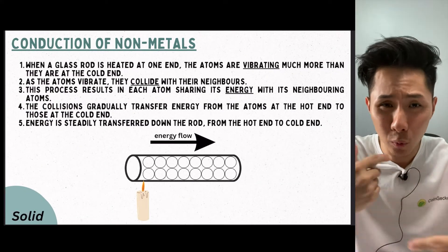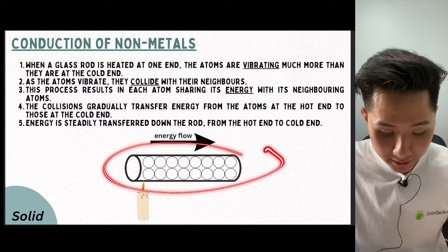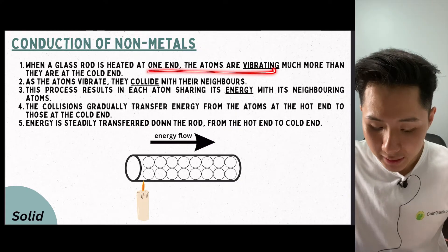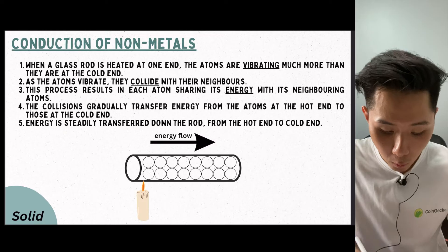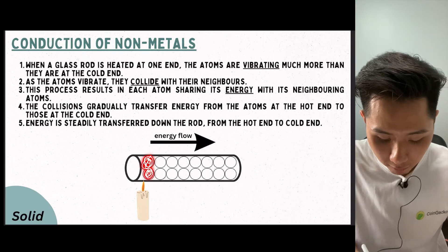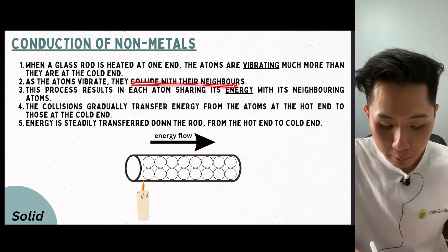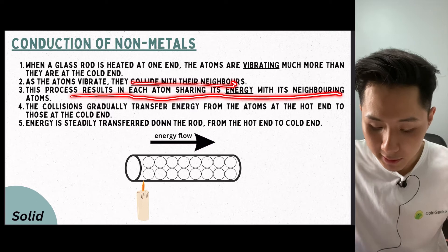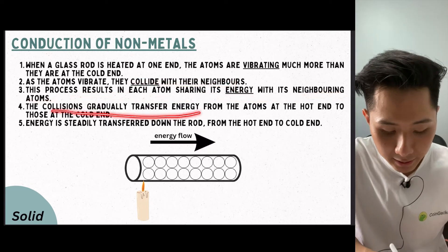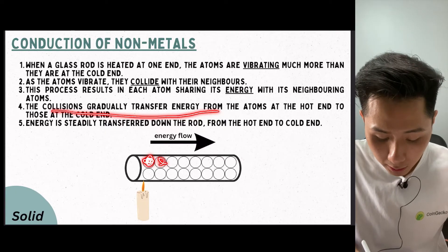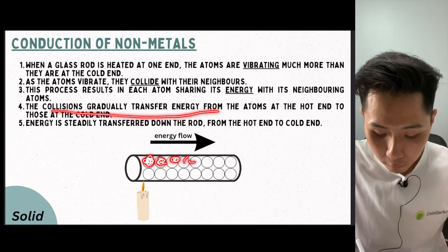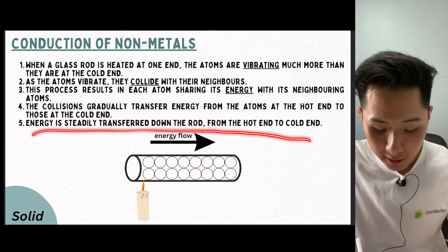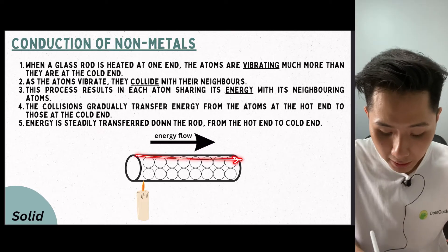Let's look into how conduction works internally. So I have a non-metal here — glassware. When the glassware is heated at one end, the atoms are vibrating more than they are at the cold end. As the atom vibrates, it collides with its neighbors, and this process results in each atom sharing its energy with its neighboring atoms. The collision gradually transfers energy, heating the particles from the hot end to the colder end. Energy is steadily transferred from left to right.